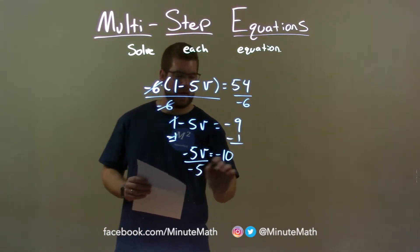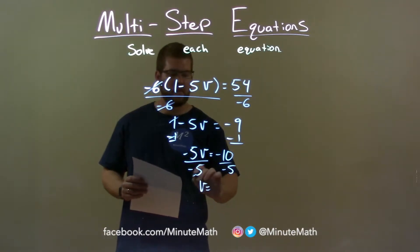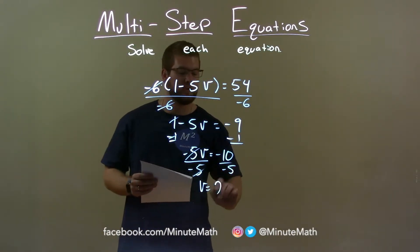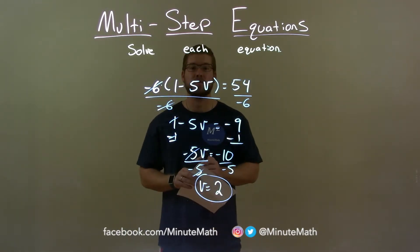Divide both sides by negative 5, and we're left with V completely now by itself, and negative 10 divided by negative 5 is positive 2. Final answer, V equals positive 2.